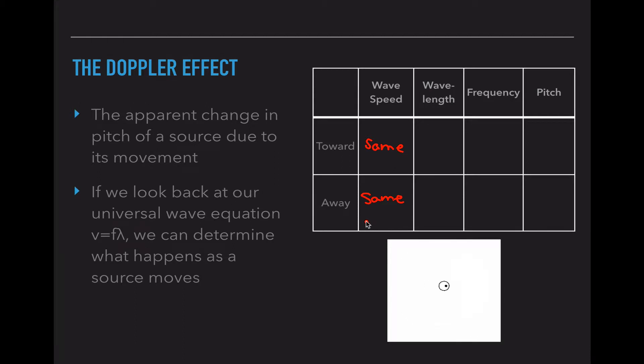If you have a cop car or an ambulance moving towards you, the same air is touching your ears as it is touching the car. So the temperature shouldn't be different, the air density shouldn't be different, so our wave speed should be the same no matter what.